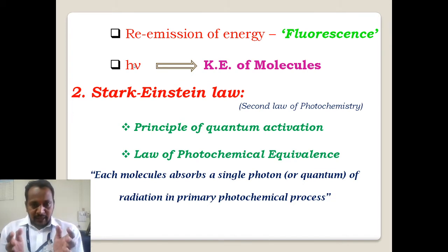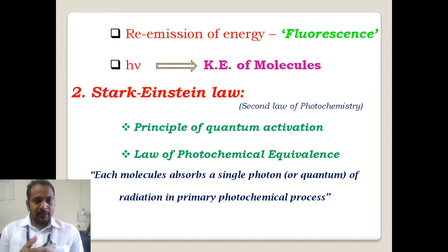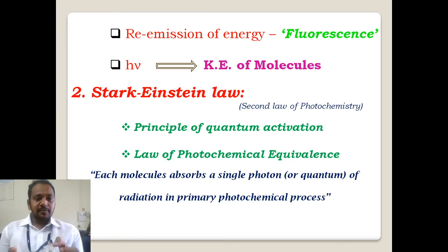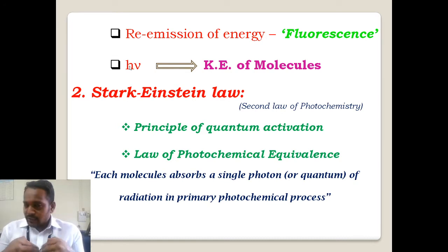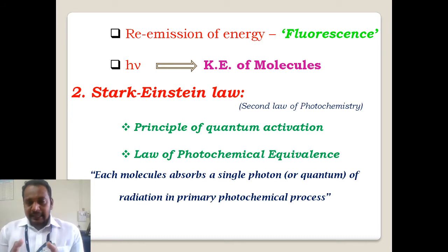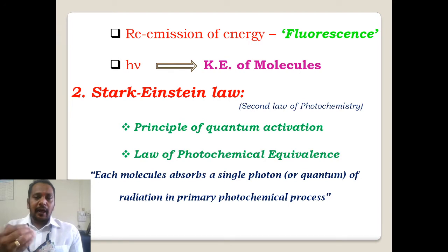When we expose our reaction system with photons or light, there is an interaction between light and the substance, which means there is an energy exchange between our photon and the reacting substance. The photon gives its energy to the material, and the reacting system acquires that energy and goes to a higher energy level — that is called the excited state.